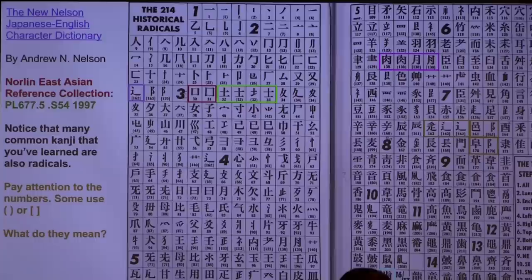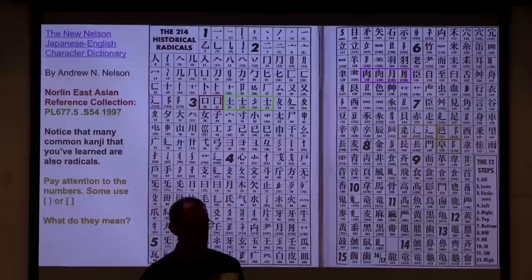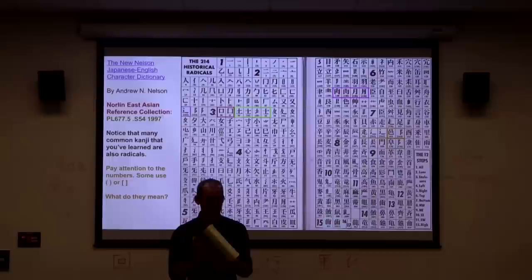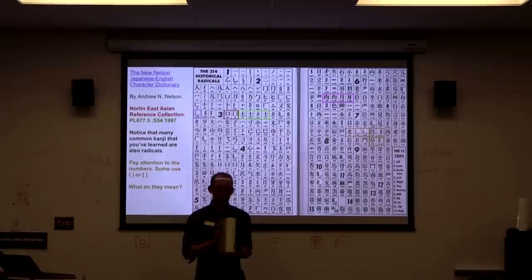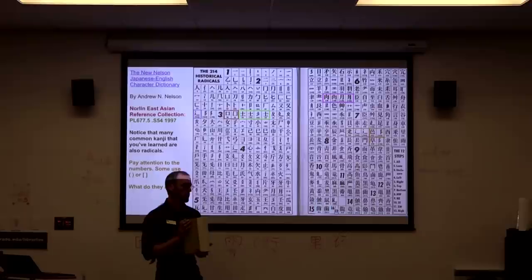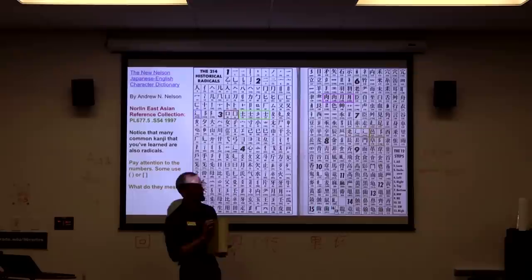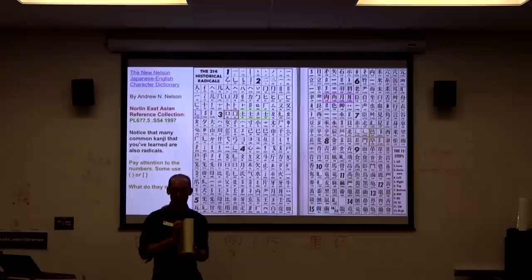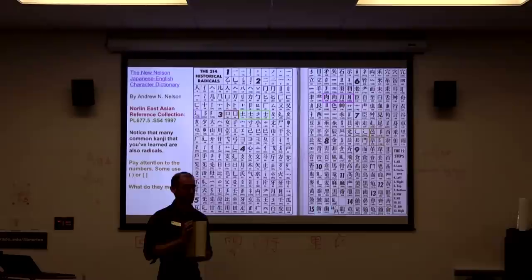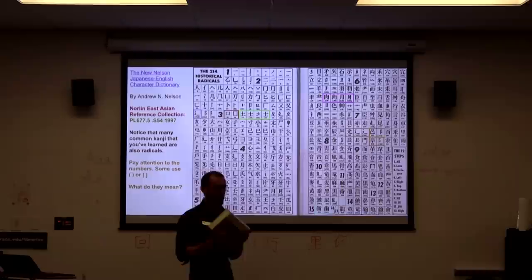The Morohashi Daikanwa Jiten — you probably won't need this unless you pursue a master's or PhD in Japanese. It's one volume of 14, this being the index volume. This dictionary set has every character ever made, ever written, with every variant that could ever have happened in the written history of Chinese and Japanese. It's one of the only dictionaries in the world that even competes with the Oxford English Dictionary in terms of size and breadth. The only reason it's shorter is because Japanese as a language is much more densely packed in its writing system.